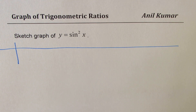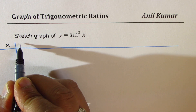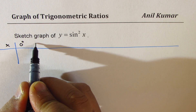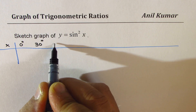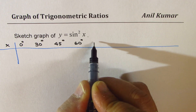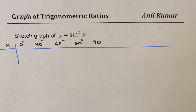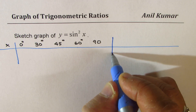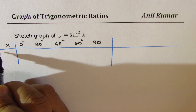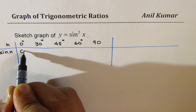You can make a table like this. Take some values of x. Let's start with 0 degrees and then we can add some standard values: 30 degrees, 45 degrees, 60 degrees, 90 degrees and repeat them. So that is quadrant 1. And then in quadrant 2, we know these values are going to be repeated. So let's write down what sine of x is. For 0, we know it is 0.